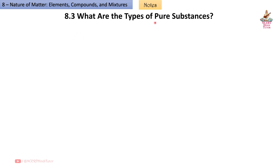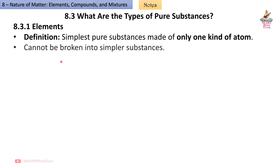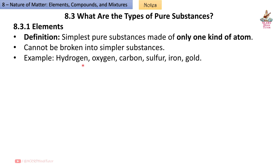8.3 What are the Types of Pure Substances? 8.3.1 Elements: Elements are the simplest pure substances made of only one kind of atom. They cannot be broken into simpler substances, e.g. Hydrogen, Oxygen, Carbon, Sulfur, Iron, Gold.